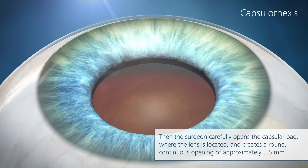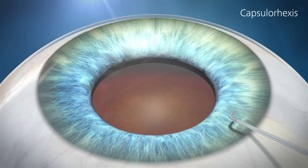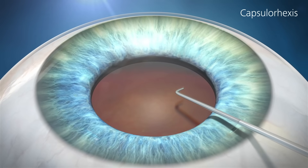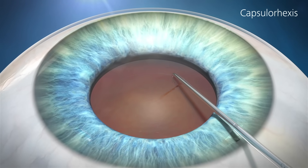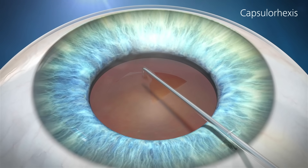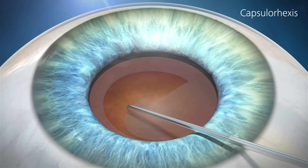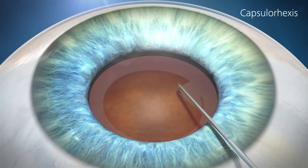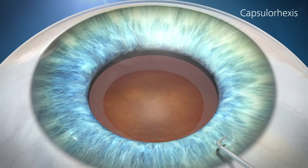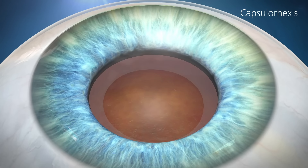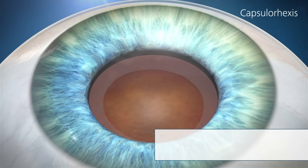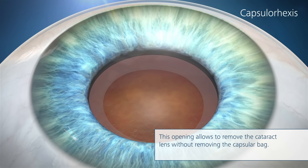Then, the surgeon carefully opens the capsular bag where the lens is located and creates a round, continuous opening of approximately 5.5 millimeters. This opening allows removal of the cataract lens without removing the capsular bag.